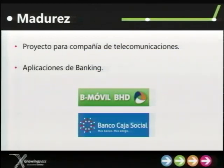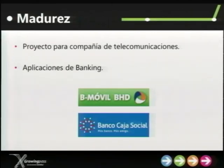But besides the project names, what I want you to observe are the types of applications we are generating. We are talking about banking applications, for example. Many of the applications that started to come up were not only larger in terms of objects, but we started to generate applications that were domain-sensitive — meaning a banking application has sensitive data, so unexpected things cannot happen.